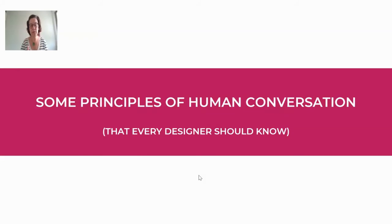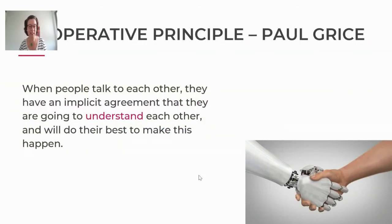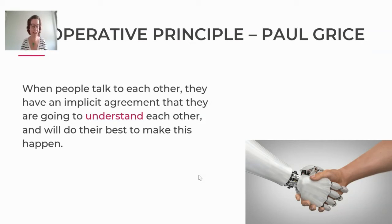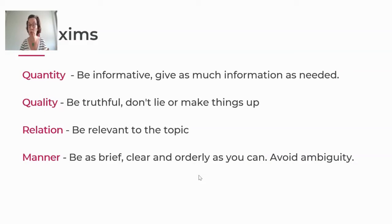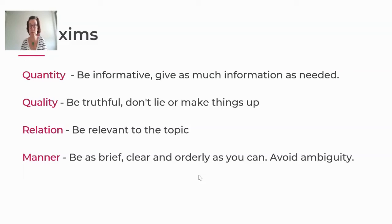Some principles of human conversation — there's one I think every conversation designer should know: the Cooperative Principle by linguist and philosopher Paul Grice. He stated that when we talk, we have the implicit agreement that we're going to do our very best to understand each other, going out of our way to make that happen — and we do it completely unconsciously. We follow four maxims: the maxim of quantity, where we promise to be as informative as possible but not give more information than needed. The maxim of quality means we promise not to lie or tell blatant untruths.